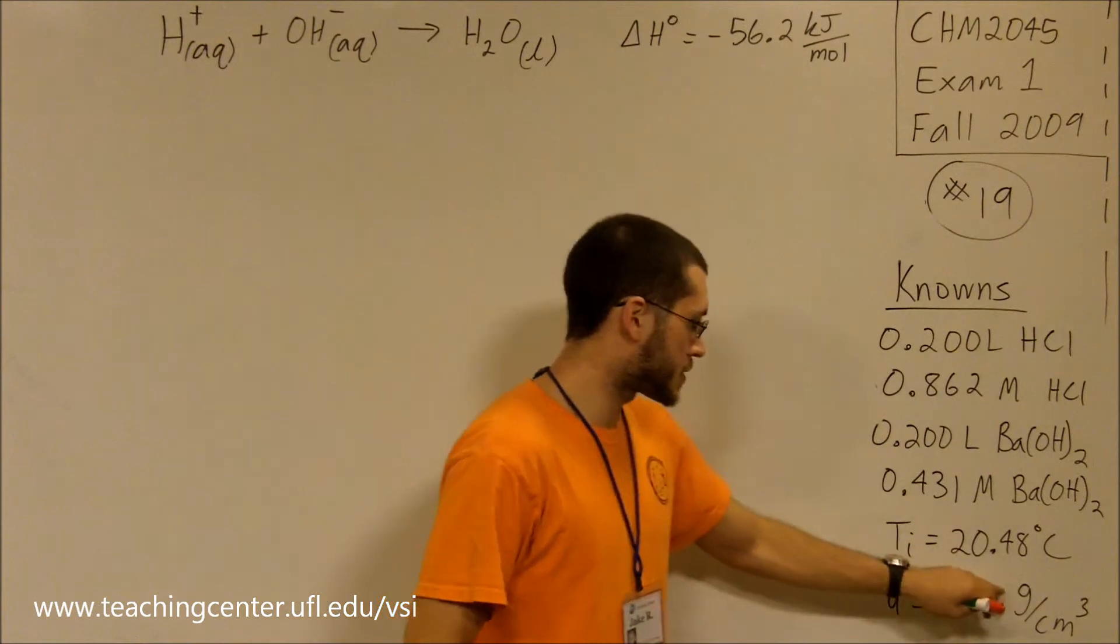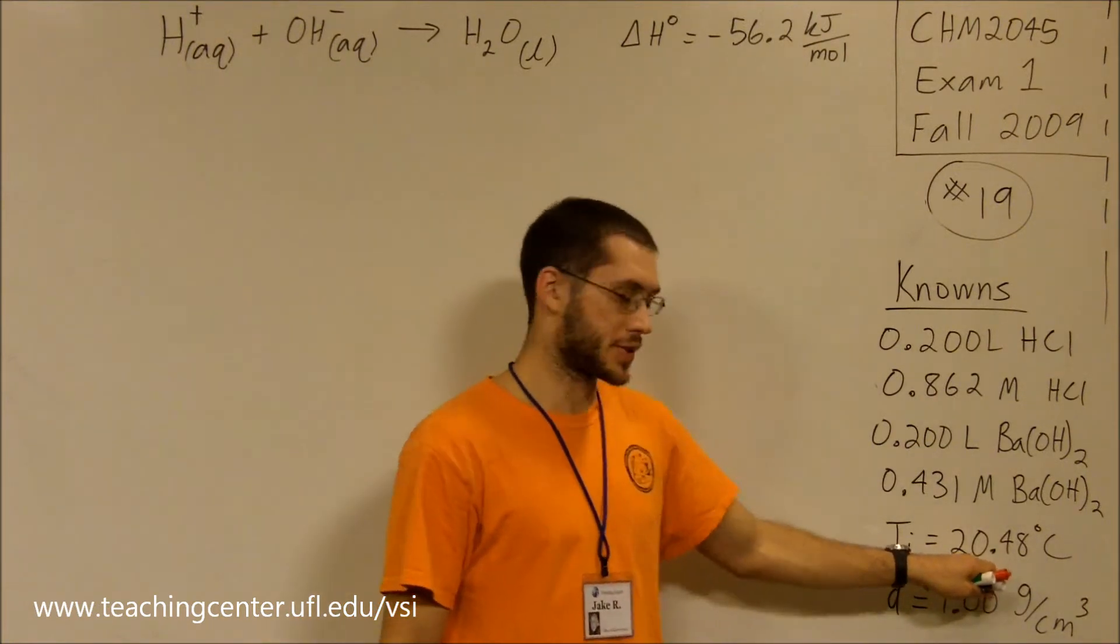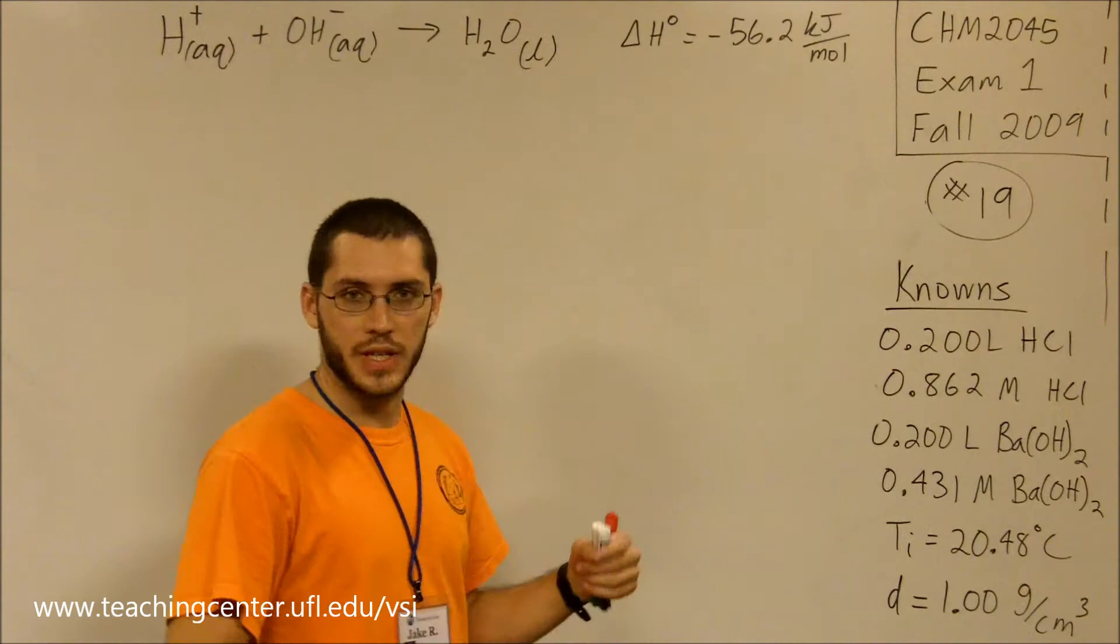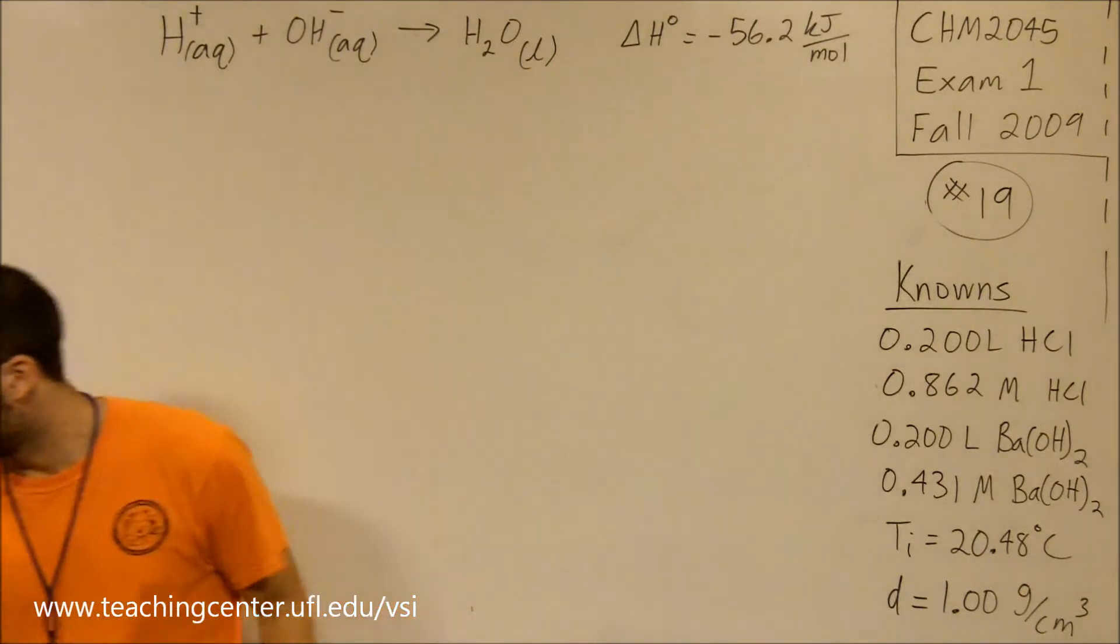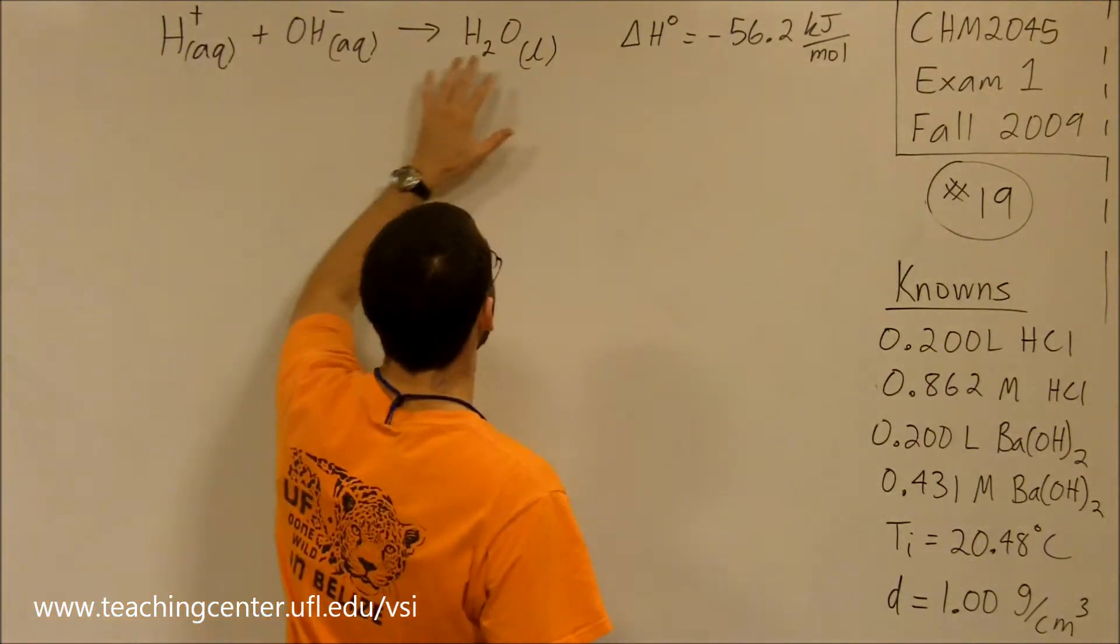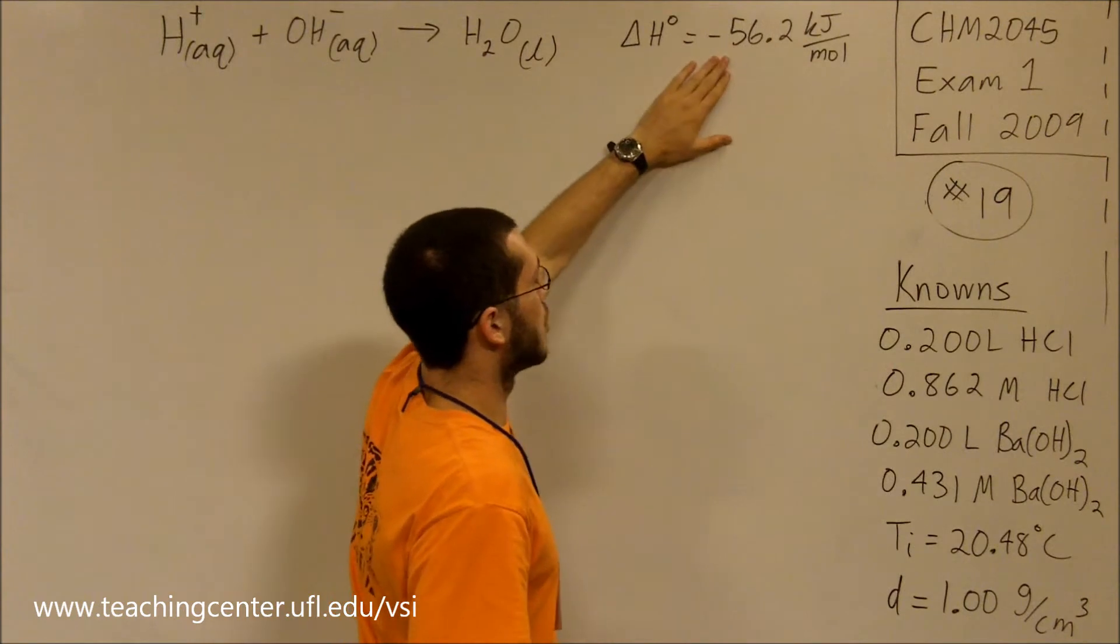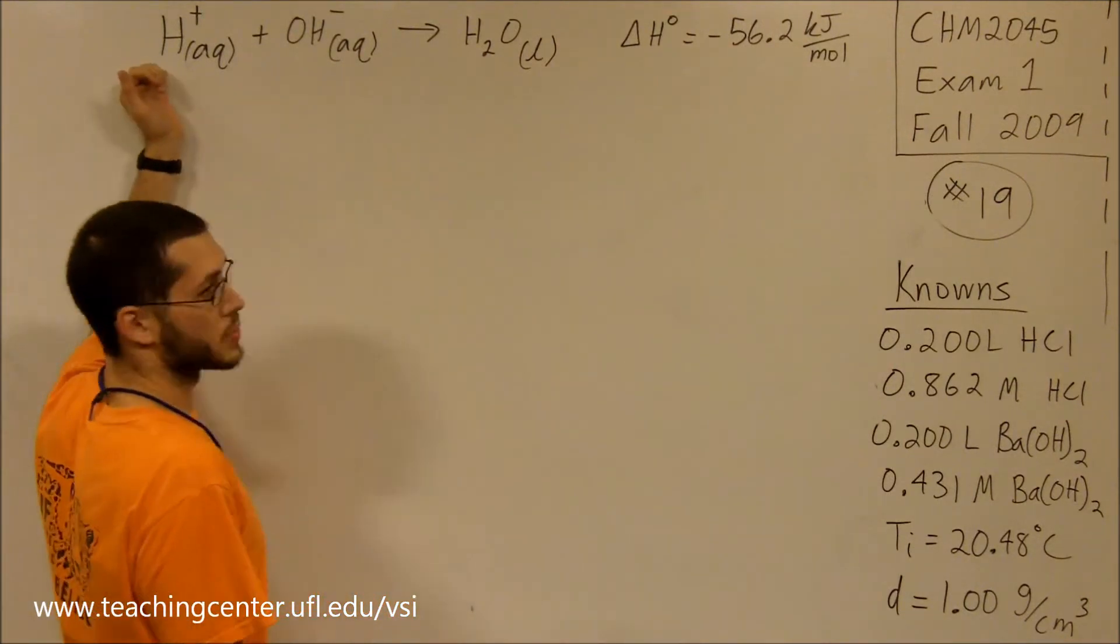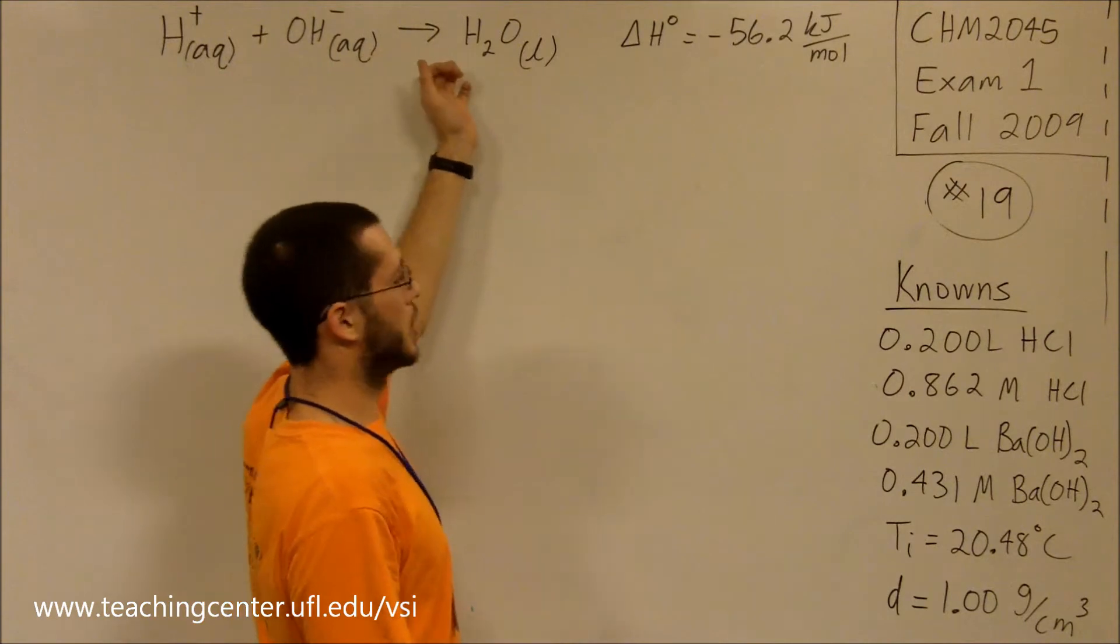Both solutions start out at 20.48 degrees Celsius, but when we mix them together, there's a chemical reaction that produces this much heat per mole, and the chemical reaction is that one H⁺ and one OH⁻ gives us H₂O.